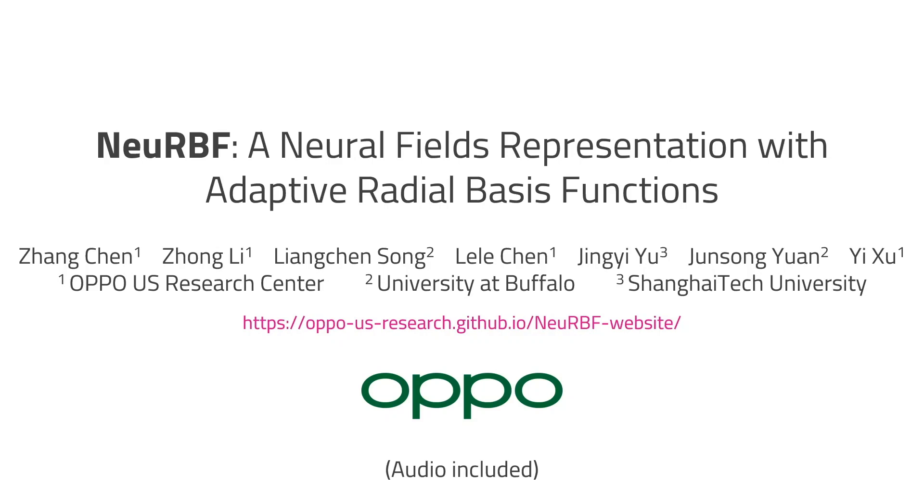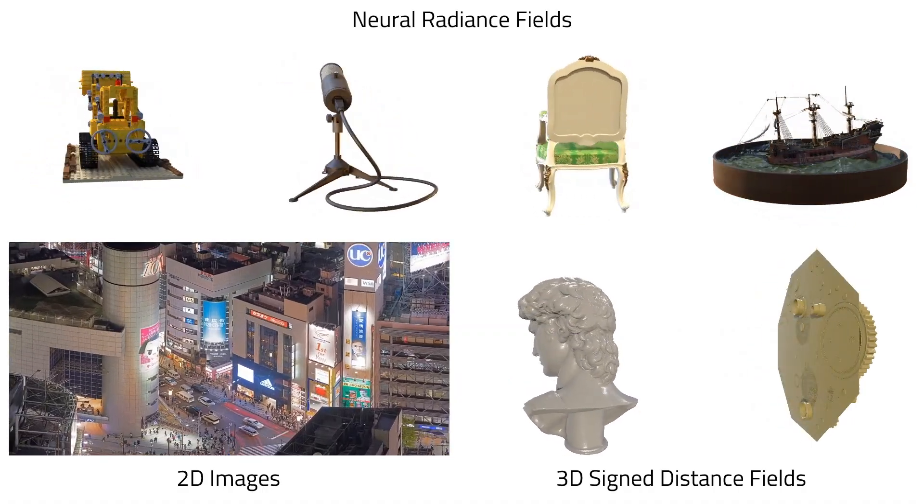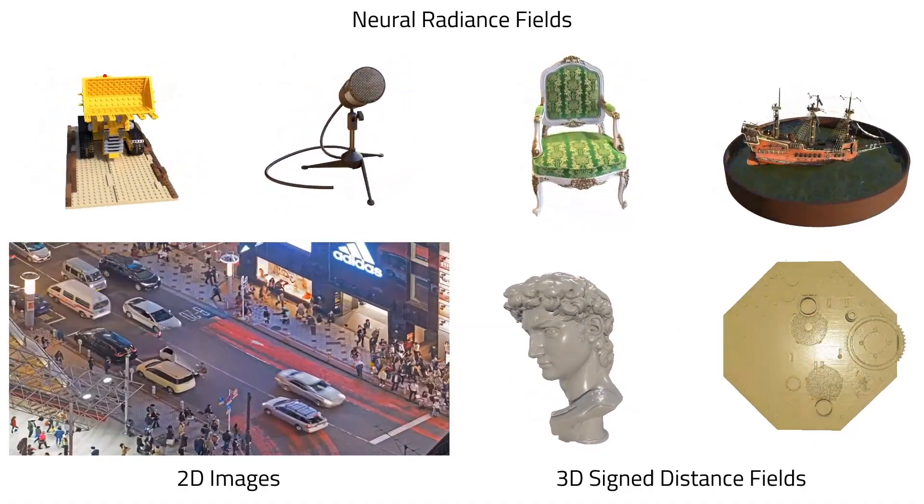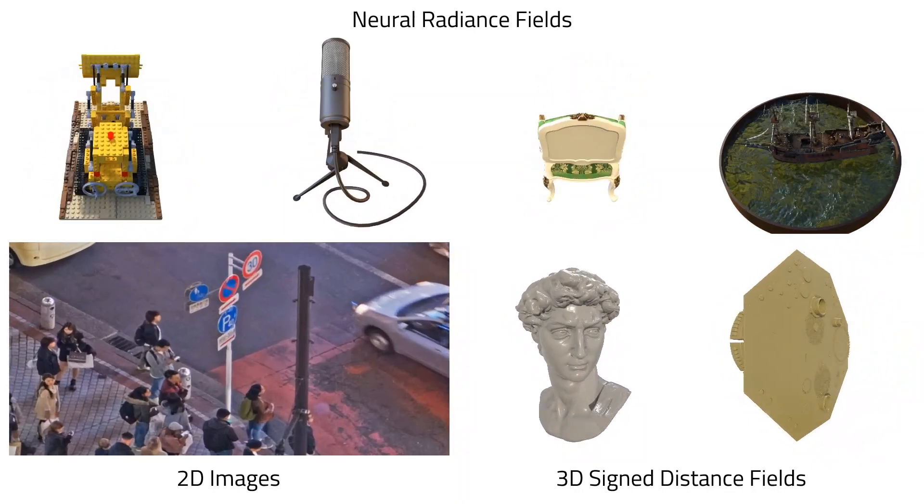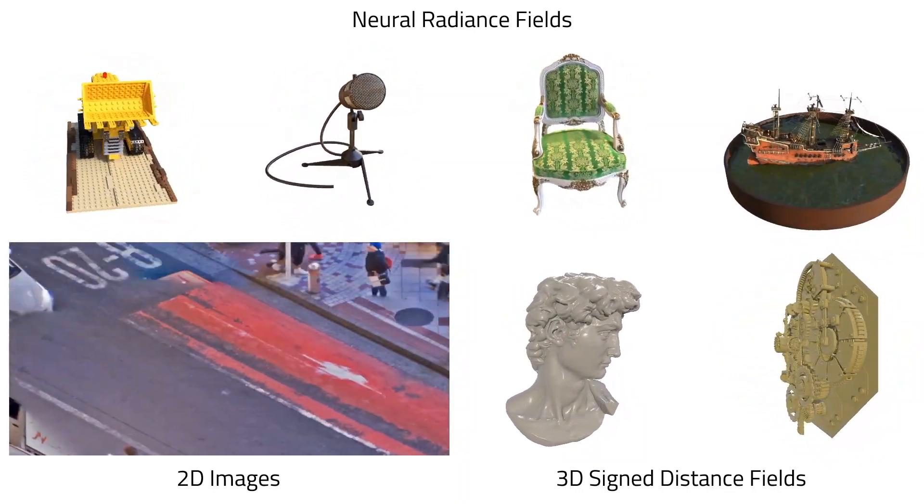We present a novel type of neural fields that uses general radial bases for signal representation. Our method achieves high representation accuracy and compact model size, and can be applied to various tasks including 2D image fitting.